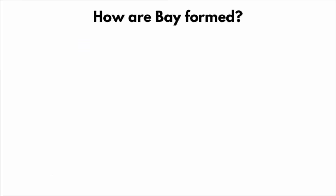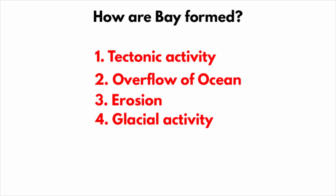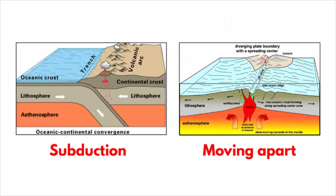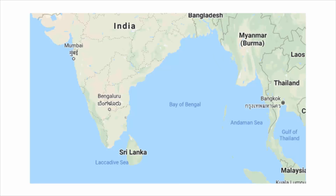A bay is formed in many ways. One of them is plate tectonics. The process of continents drifting together and drifting apart causes the formation of many large bays. Look at the Bay of Bengal, the largest bay in the world.